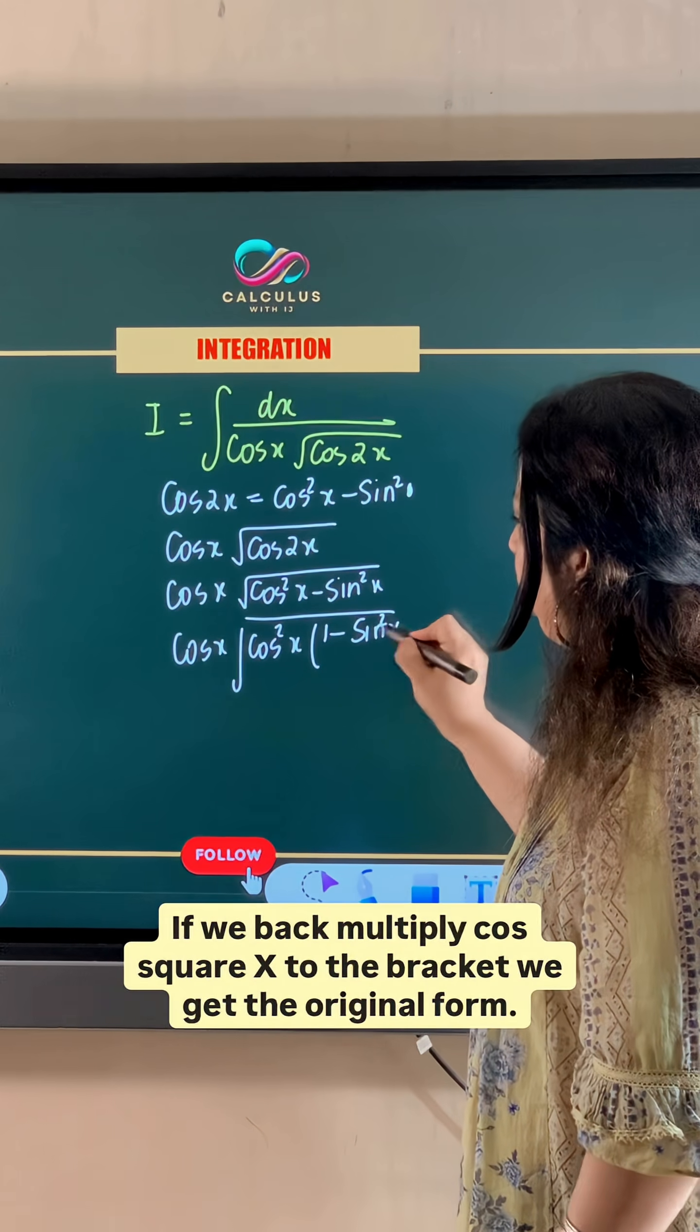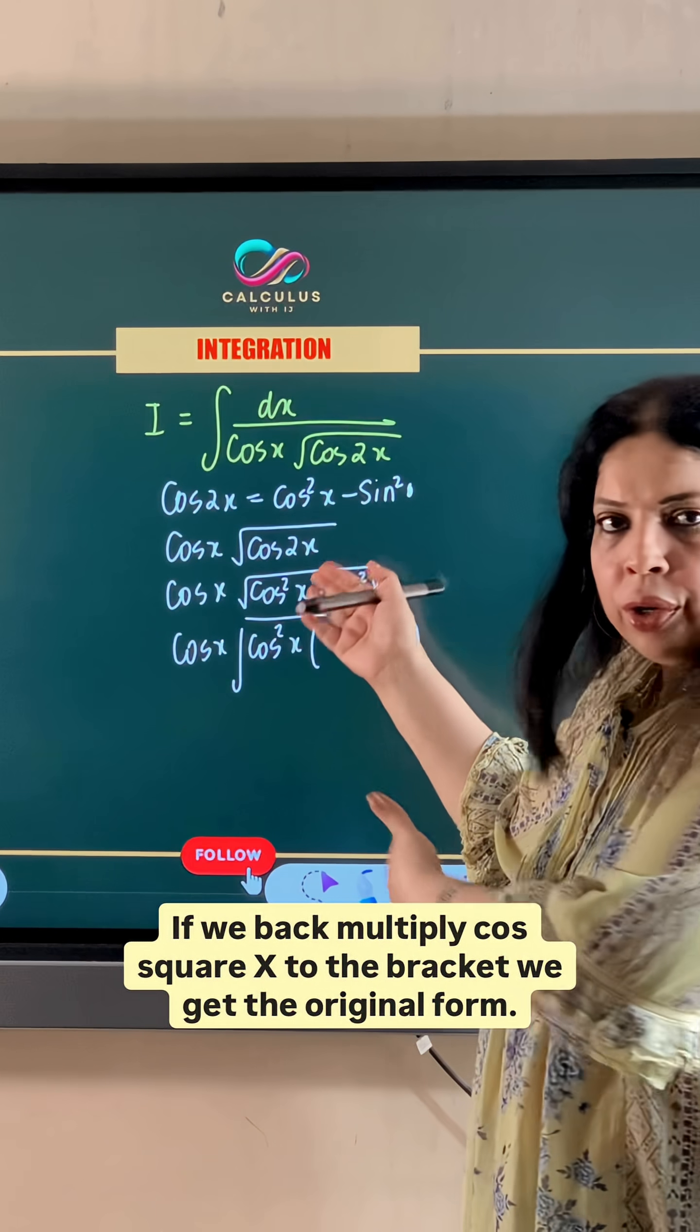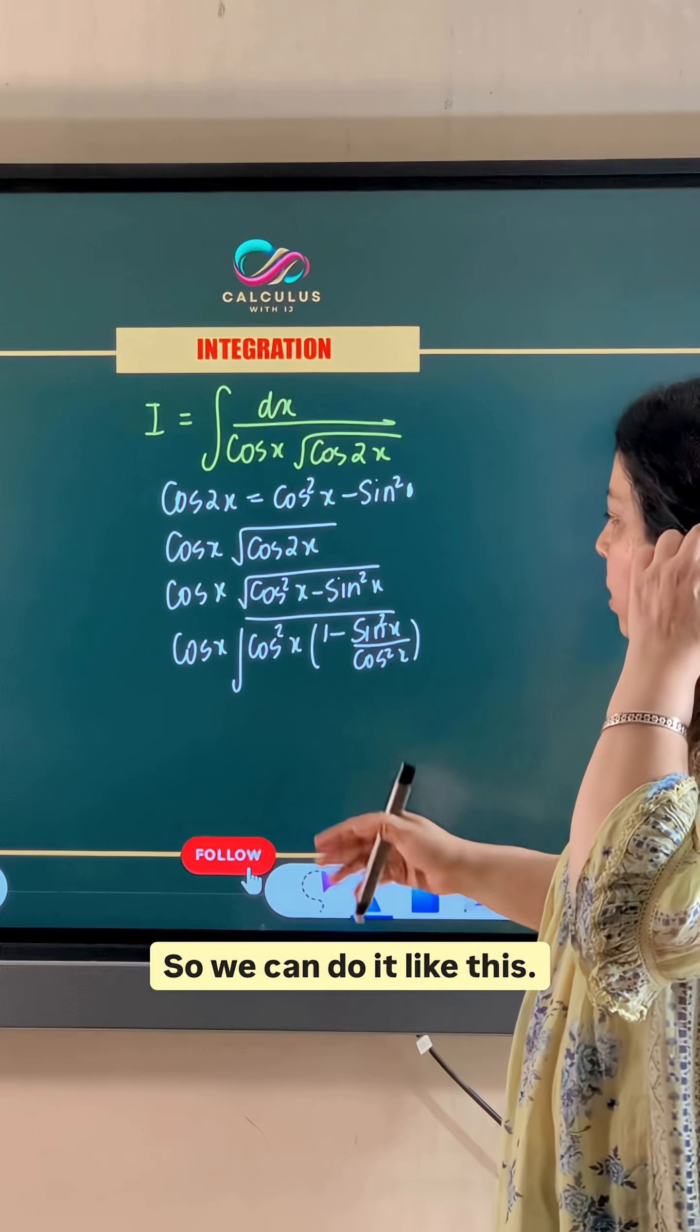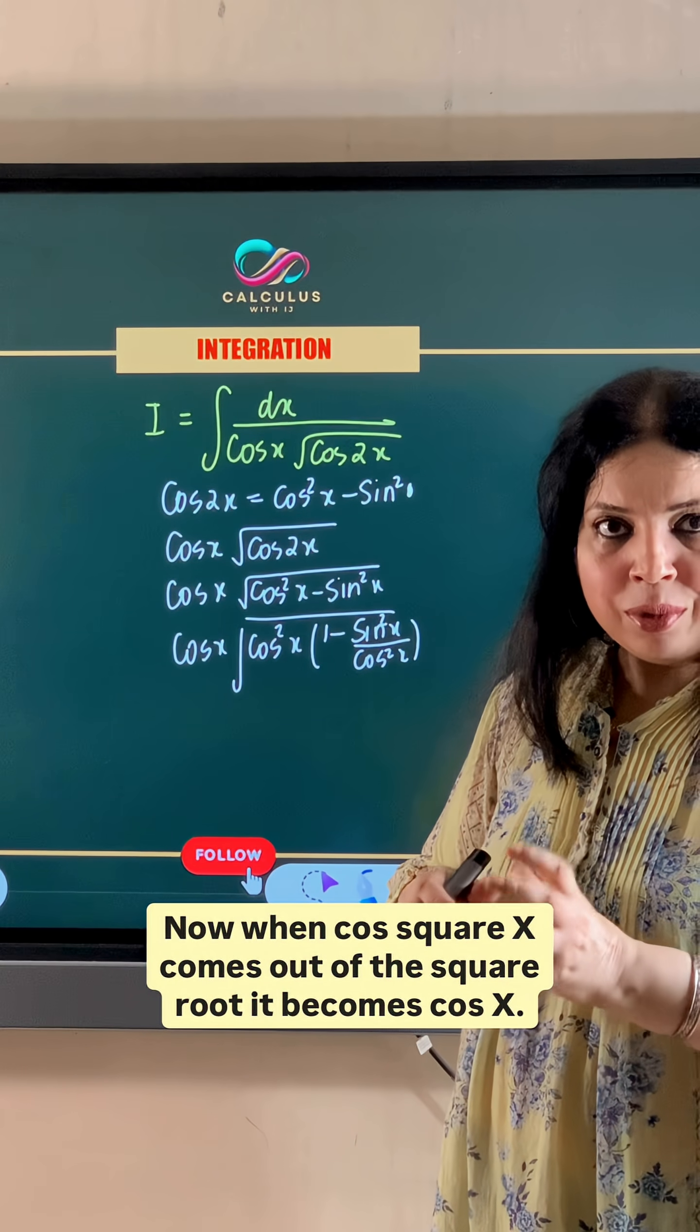Now why does it happen? If we back multiply cos square x to the bracket, we get the original form. So we can do it like this. Now when cos square x comes out of the square root, it becomes cos x.